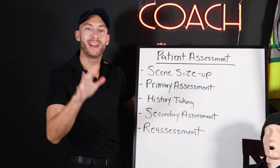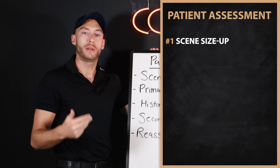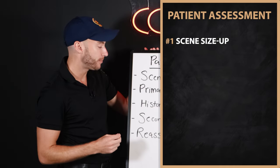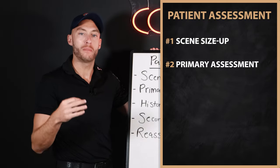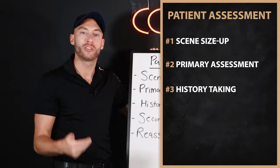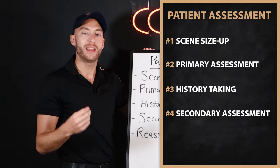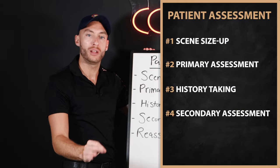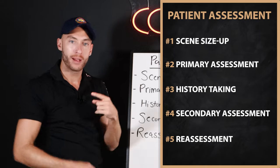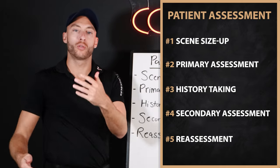Patient assessment is broken up into five major parts. First, we have scene size-up — what do you see when you first get to the scene? Primary assessment is mainly looking for life threats and doing a rapid exam of the patient. History taking is getting the patient's history, and we'll have mnemonics for this. The secondary assessment is a more detailed assessment, usually en route to the hospital. And reassessment is continually reassessing our primary and secondary assessments until we transfer care to the nurse or doctor at the hospital.